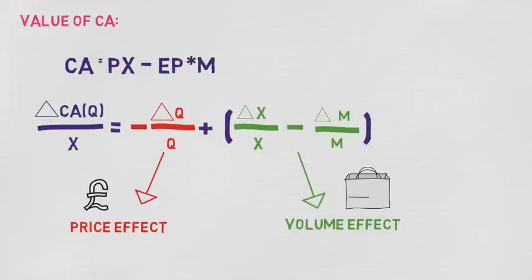Given that a real depreciation implies delta Q over Q is greater than zero, then minus delta Q over Q is less than zero, so a real depreciation deteriorates the current account through the price effect. Contrastingly, a real depreciation results in domestic goods being cheaper, so the volume of exports increases, and foreign goods become more expensive, so the volume of imports decreases, meaning the current account improves through the volume effect. So we can see there are two opposing forces, with the price effect being negative and the volume effect being positive, and the total impact depends on the relative size of both effects.